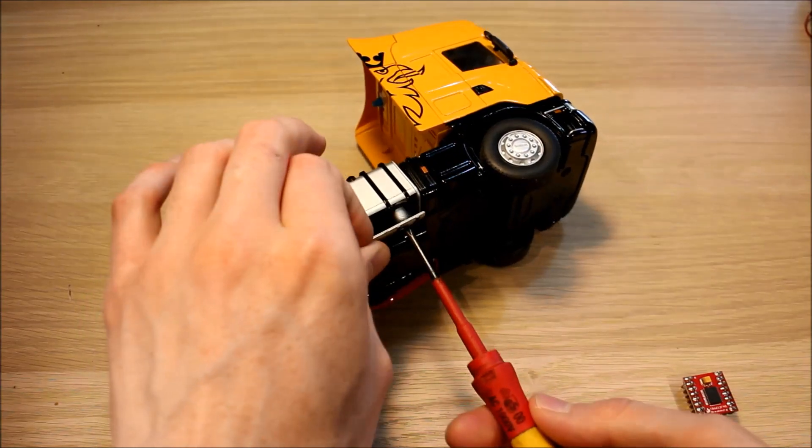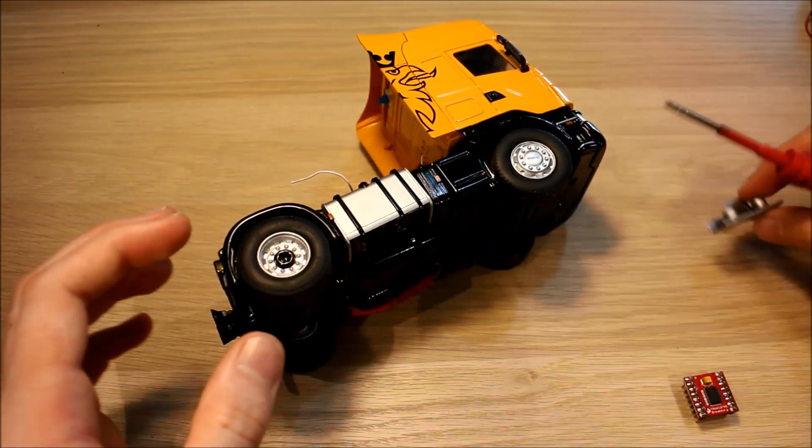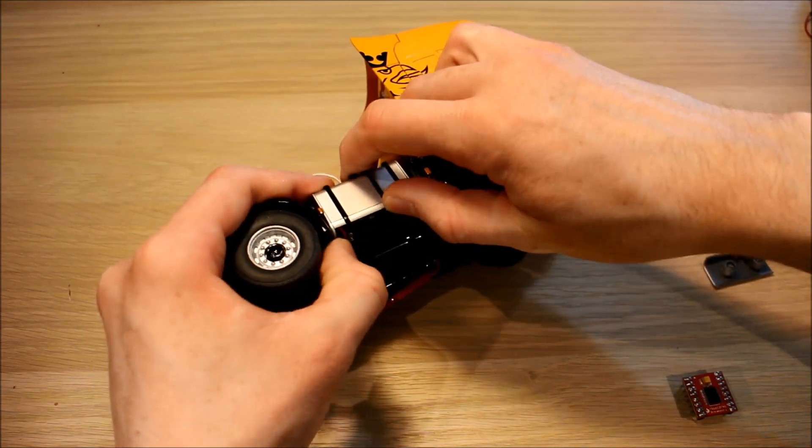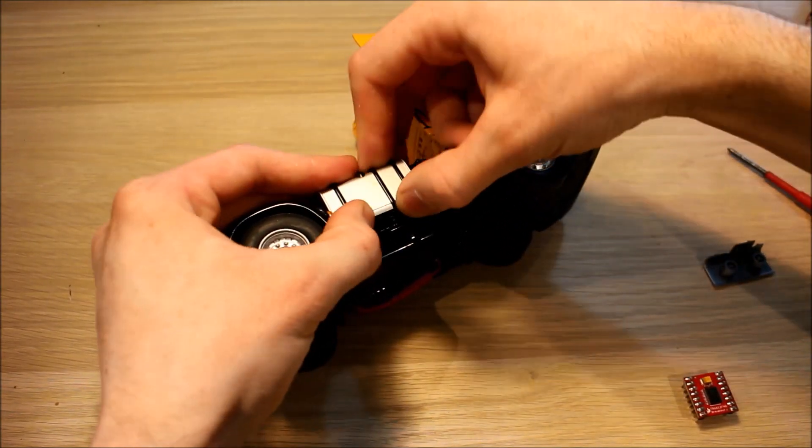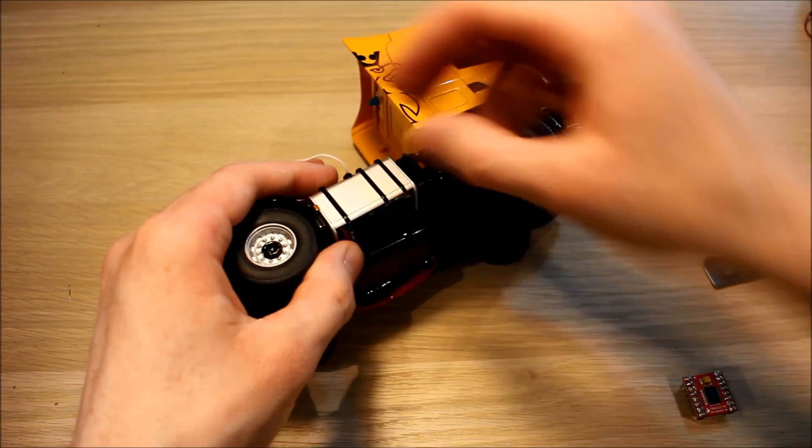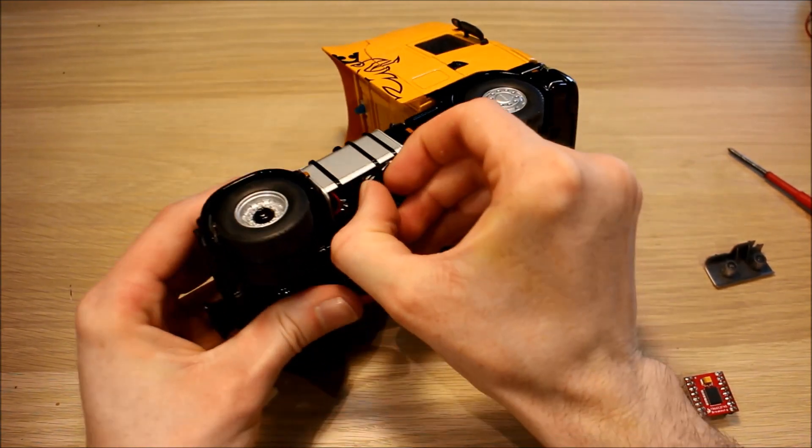We need to check that the motor can be driven first with the 3.7 volts, but if it can, that should make things a lot simpler. You can see in here we have the motor driver, and actually looks like a voltage regulator as well.